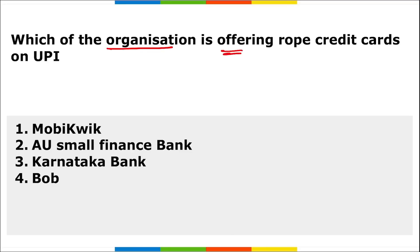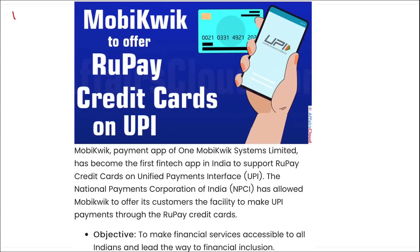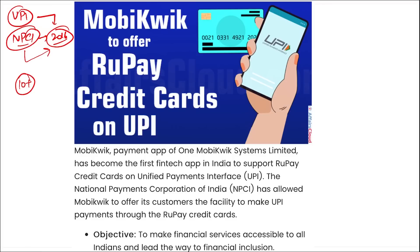Next: which organization is offering Rupay credit card on UPI? It is Mobywik — a payment app of One Mobywik Systems Limited. Mobywik became the first fintech app in India to support Rupay credit cards on UPI. UPI was launched by NPCI — the National Payments Corporation of India — and UPI is now used in more than 10 countries. Note: it is NPCI that was launched in 2016, not UPI itself.